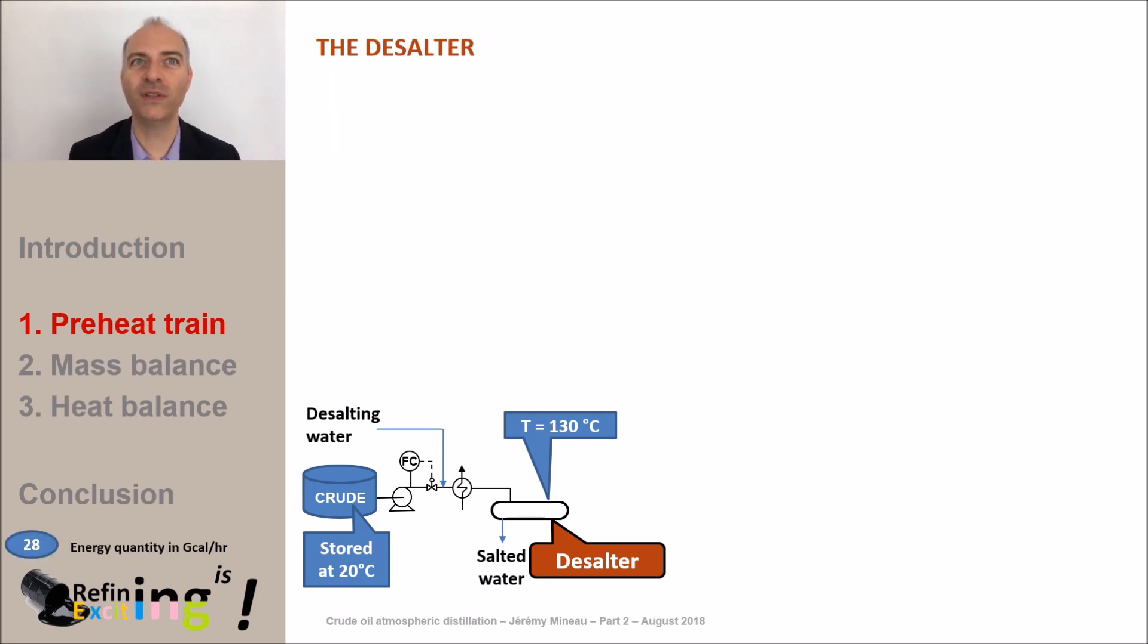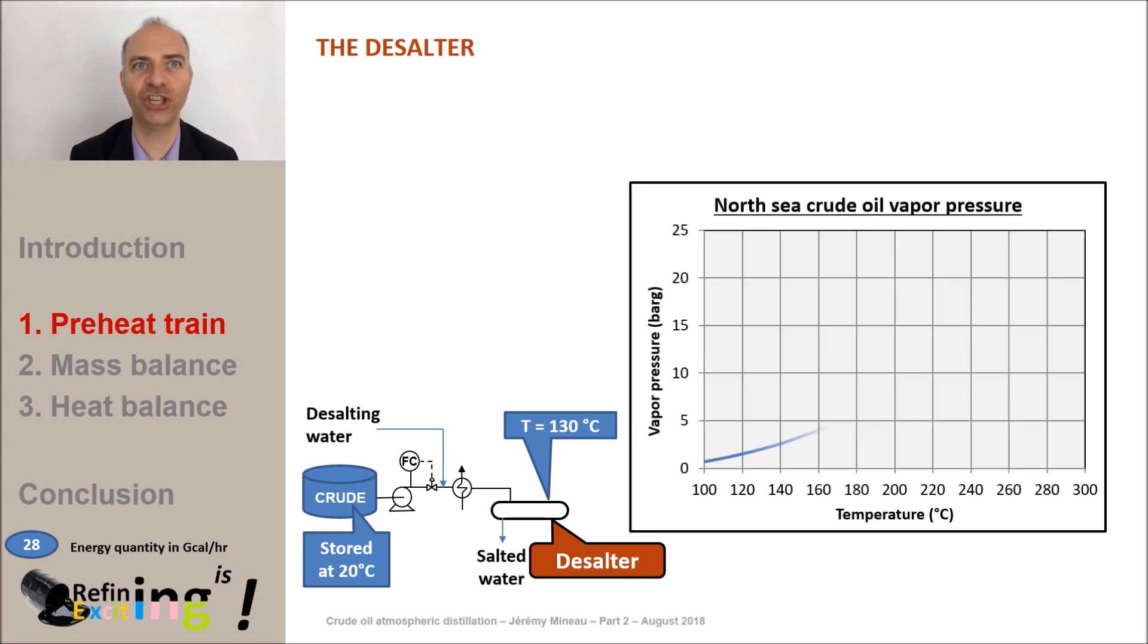The pressure will be chosen so as not to vaporize the crude at the operating temperature of the desalter and consider a margin on top of that figure. In our case we see that the pressure at which the first bubble of gas is formed at 130 degrees C is about 2.5 bar G.